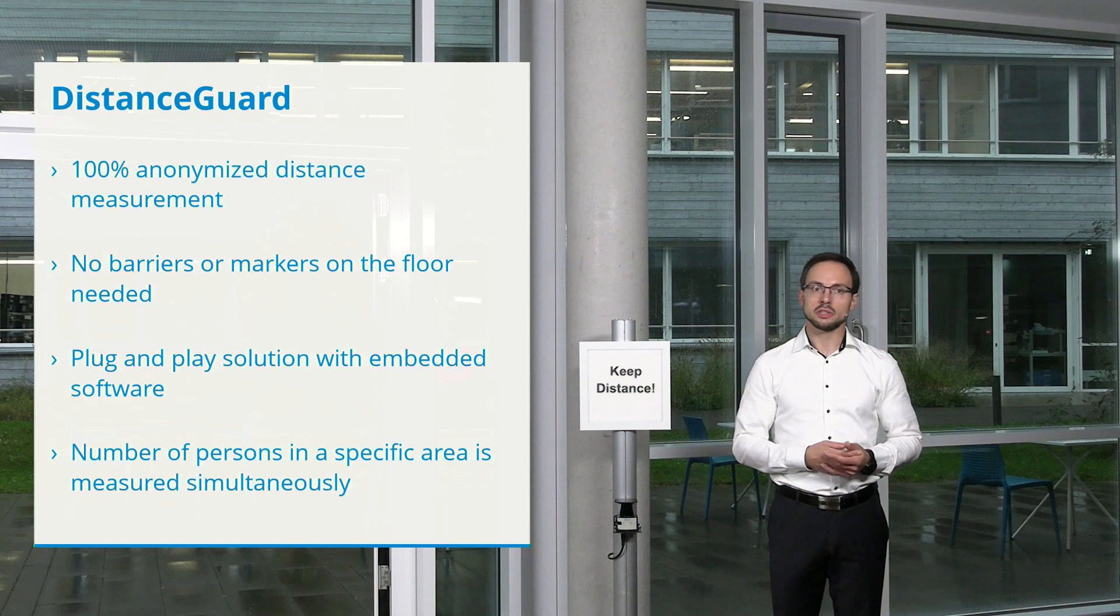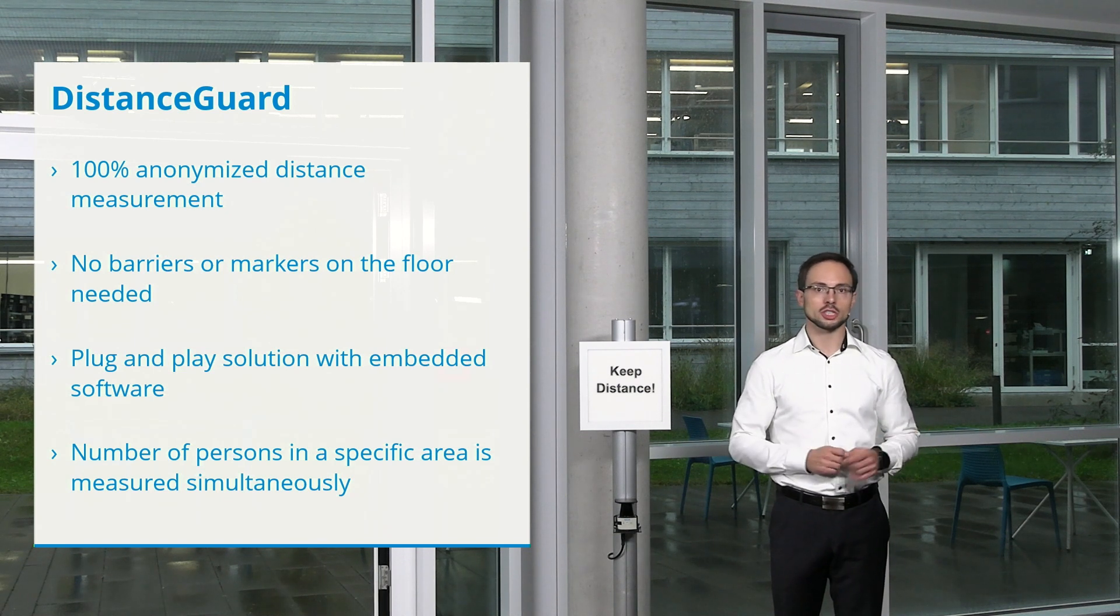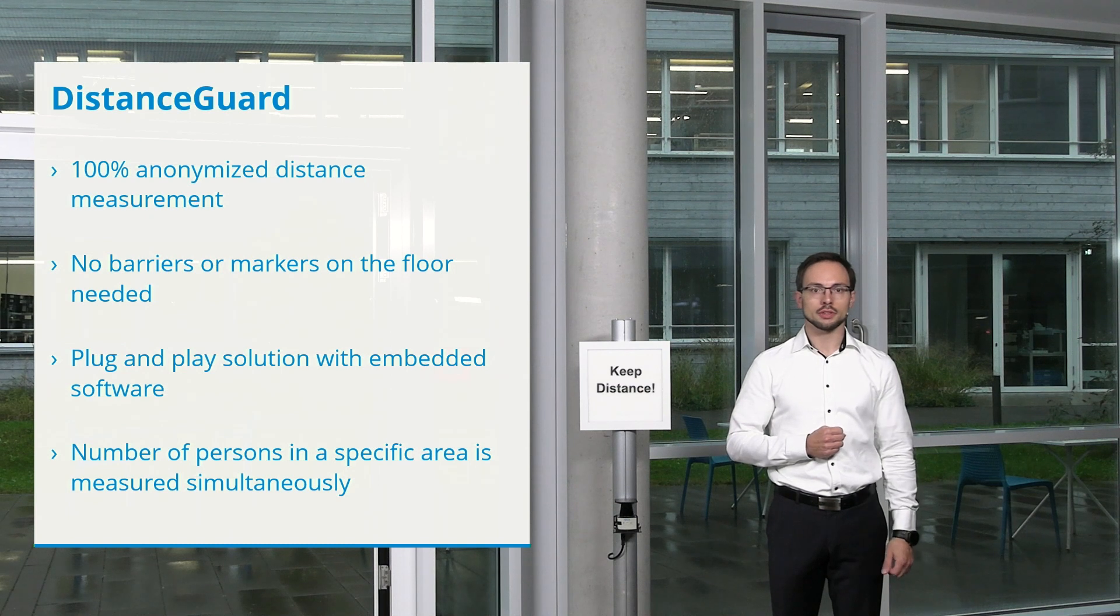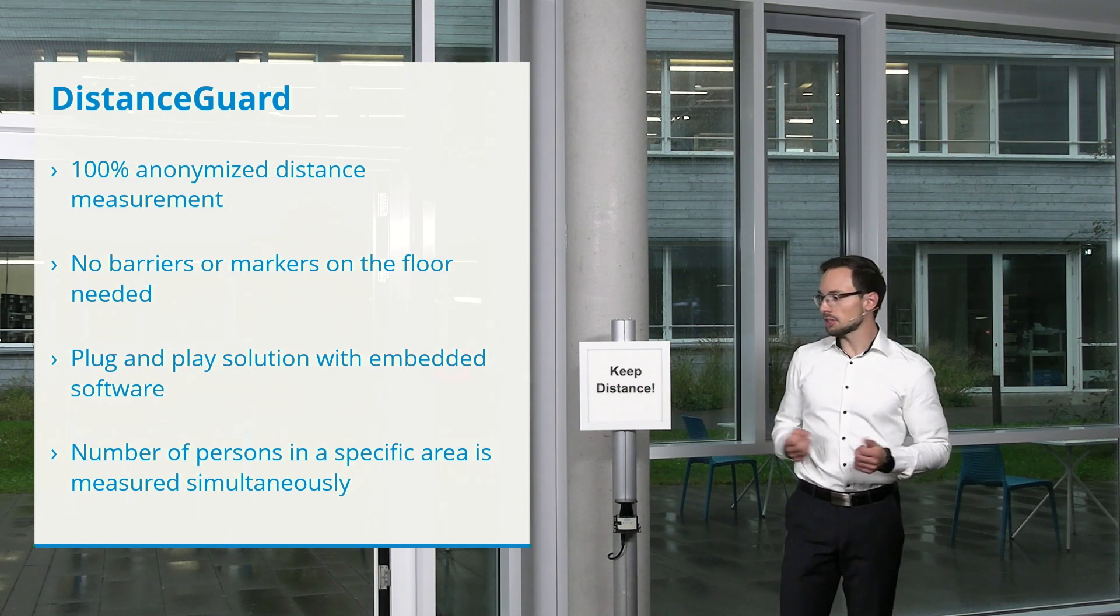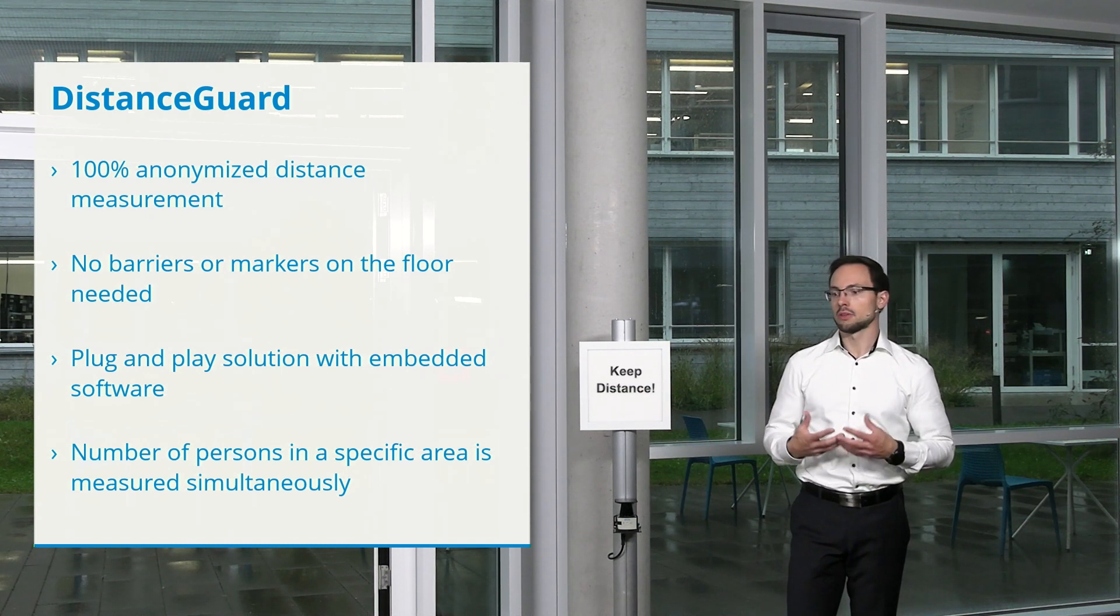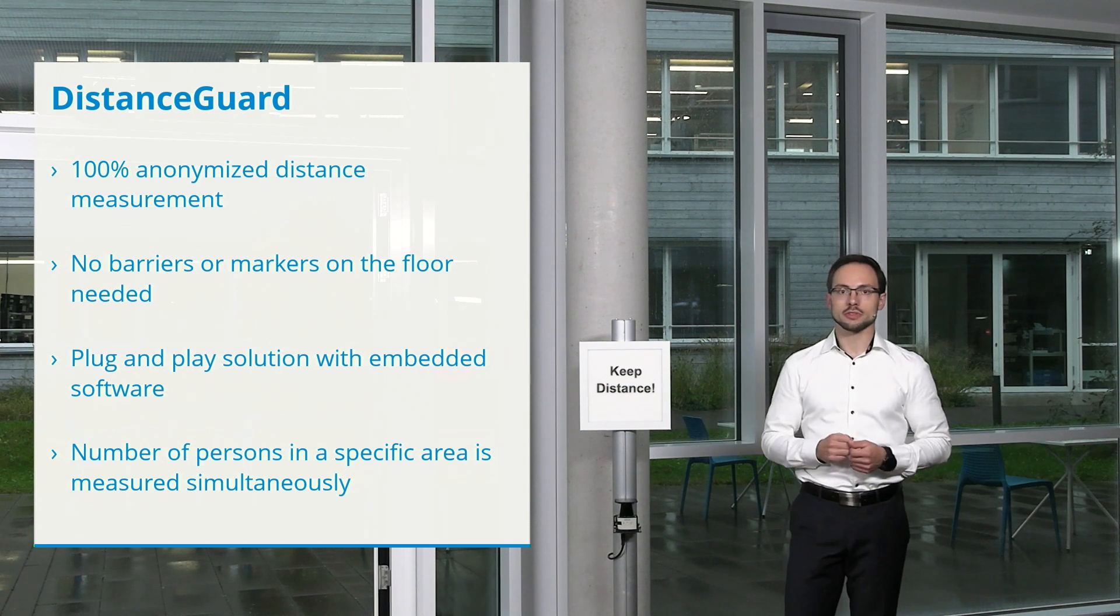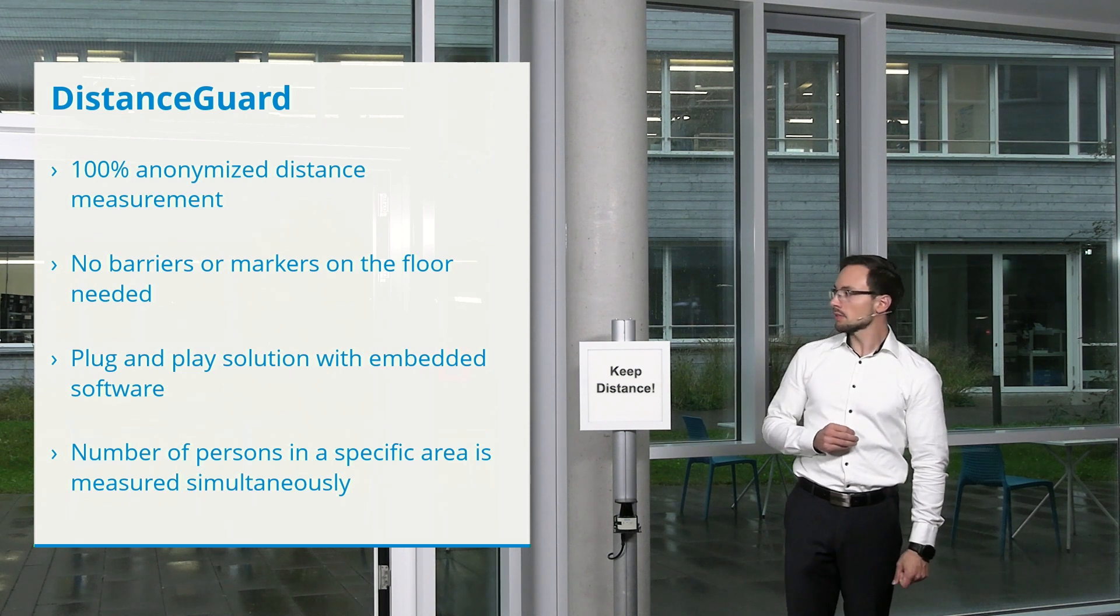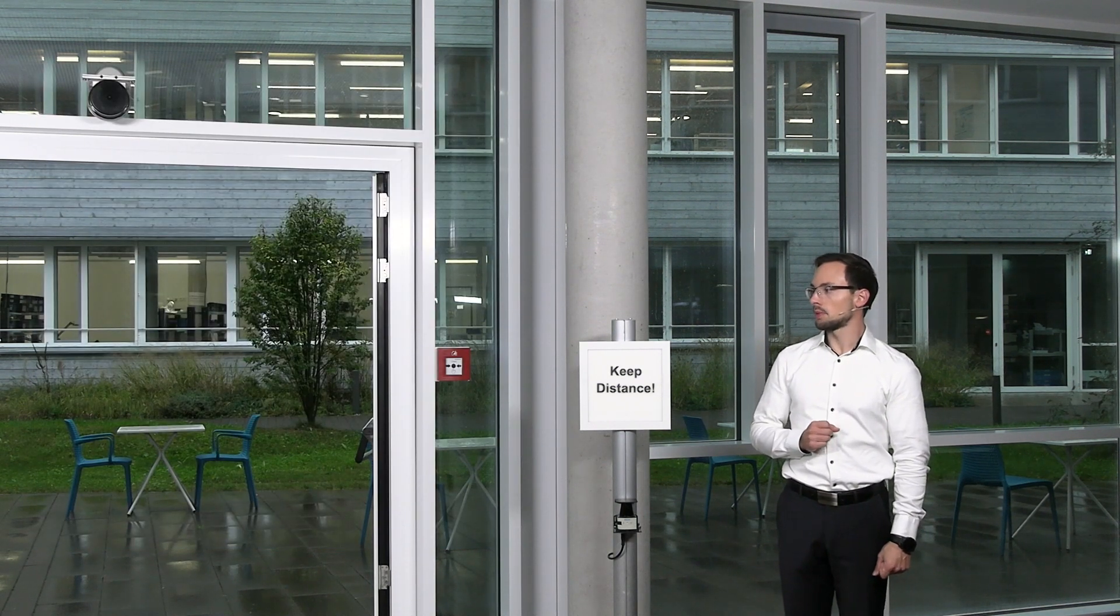In default it is 1.5 meters but that can also be changed with just one mouse click, also define the limits of the area we want to look into. And for such areas then we can not only detect the distance of the persons to each other but also the number. Handing over now to the second solution and Tiberius with the people counter.